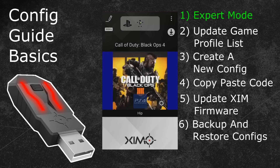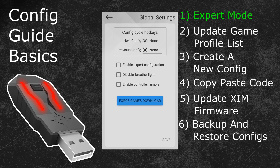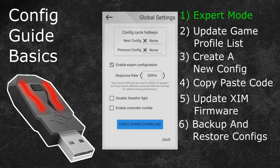When your Zim manager is running, click on the options button in the top right. After that click on global settings. In the following menu you can tick the box next to the expert configuration. This will allow you to get access to the advanced settings of your Zim, such as the polling rate option which just popped up. You can now hit the save button in the bottom right and then exit this menu with the arrow button in the top left.